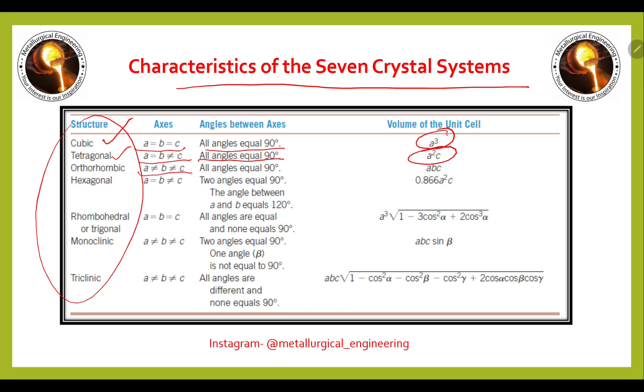Third, orthorhombic: a ≠ b ≠ c, all angles equal 90 degrees, and the volume of the unit cell is a·b·c.